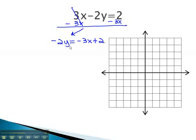To get the y alone, we divide both sides by negative 2. As we divide by negative 2, it is important to divide each and every term by 2. The negatives come to a positive, and we get 3 halves x minus 1.